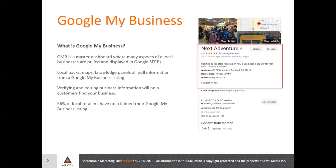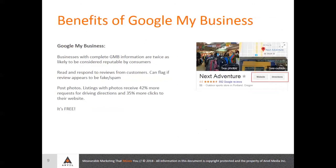One thing that struck me when I was doing research for this is that 56% of local retailers have not claimed their Google My Business listing. I put this first because, in my opinion, this is one of the lowest hanging fruit items that you can do with regard to increasing your local visibility. It's fairly straightforward — all you really have to do to get started is go in there and claim and verify if you have not done so already, and then Google walks you through that.